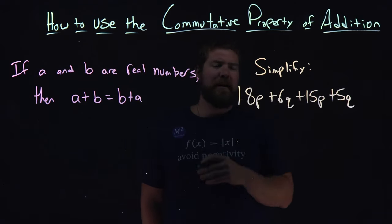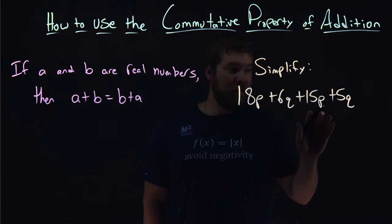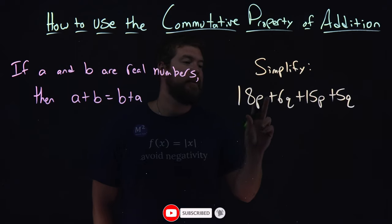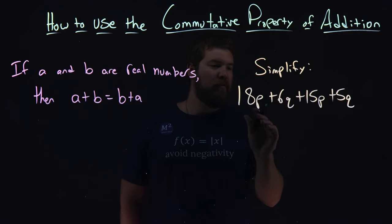So let's use that to simplify this expression. 18p plus 6q plus 15p plus 5q. Our commutative property of addition says that we can rearrange this addition to see which ones we want to add first. So let's do that.